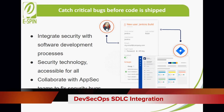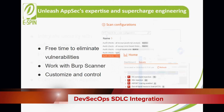Catch critical bugs before code is shipped. Integrate security with software development processes — a wide array of integrations, for example CI/CD, bug tracking systems, and a rich API means you can bake security into your software development. Accessible for all: get easily digested feedback on vulnerabilities to alert your teams. Collaborate with AppSec teams to fix security bugs with native Jira integration featuring ticket options for severity and confidence level triggers, meaning developers can collaborate with teams to remediate critical issues.